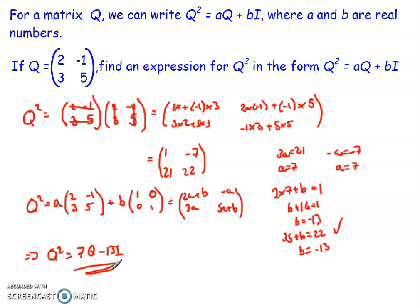We can use this to rewrite Q² more efficiently within larger calculations involving matrix multiplication. For instance, the bI term may appear in several places and allow cancellation — like in the first example where we had A² and −B². It all depends on the context, but being able to write a matrix in this form is a key technique.